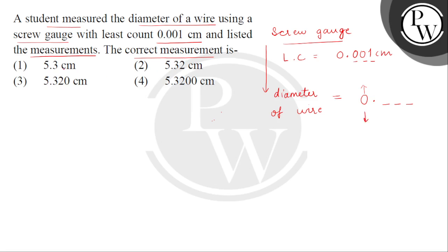Ab yahaan per bachyo agar em option 1 dekhe, tho ye jis bhi instrument se measure hooga, us ka least count hooga 0.1 cm. Then second option ke liye least count hoonna chahi 0.01 cm.